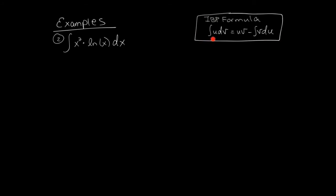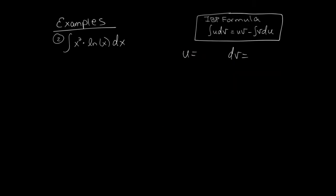Here's our next example. We're going to apply integration by parts to x squared times ln of x. We need to figure out which function is u and which is dv. Suppose we put the ln function in for dv — unfortunately there's a problem: what's the antiderivative of the ln function? We don't know the answer to that yet. We know the derivative of ln, but not the antiderivative. So this is not going to work — we have to choose u and dv differently.